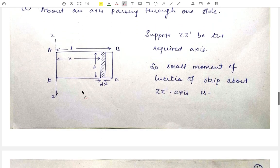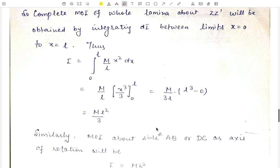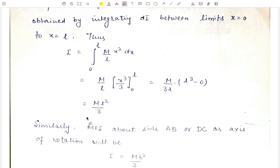Now to find out the moment of inertia of the whole lamina about this axis, we will integrate this small moment of inertia between the limits. The limits will be from side AD to side BC, that is from x = 0 to x = L. The complete moment of inertia equals the integration from 0 to L of (M/L)·x²·dx. Taking M/L out and integrating x² gives x³/3 between limits 0 to L. Putting the limits, the moment of inertia equals ML²/3.